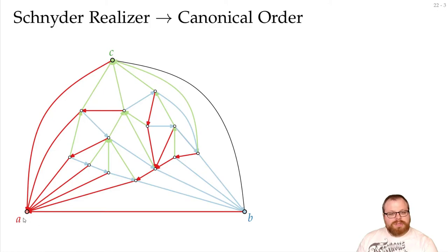Now we want to do a pre-order traversal on this red tree. In particular, we want to do a counterclockwise one. So we start here, take this vertex next, go back, go to this vertex, here, here, here, go back, go here.